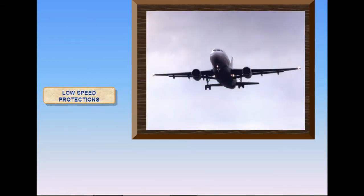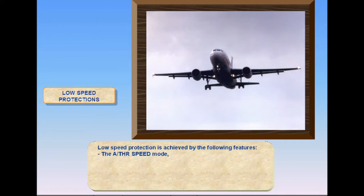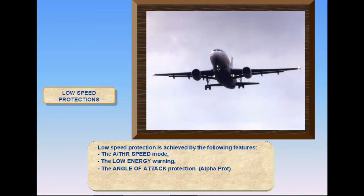Low speed protection is achieved by the following features: the autothrottle speed mode, the low energy warning, the angle of attack protection, alpha protection, the alpha floor protection, and the wind shear protection.